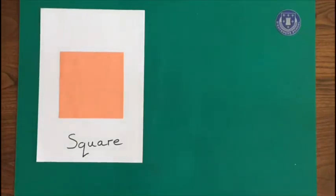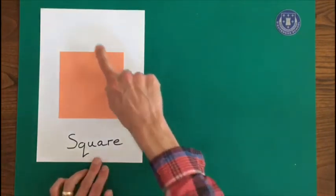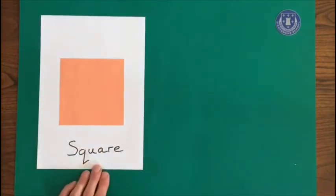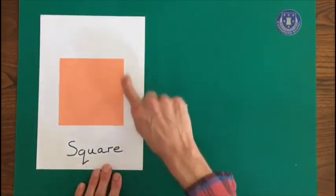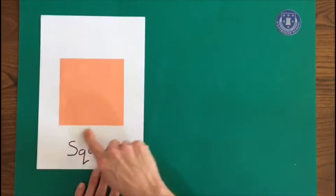Hi Devan. Today's shape we'll be looking at is the square. Here's our square. The square has four sides. One, two, three, four. Each side is straight and they are all the same size.